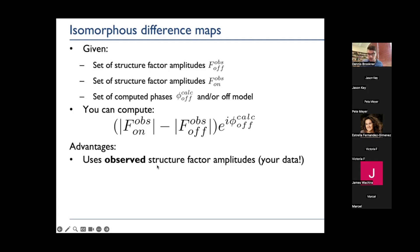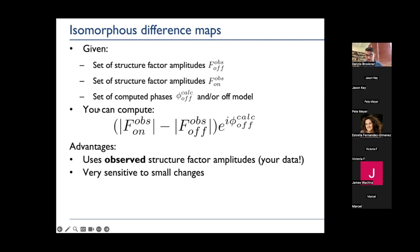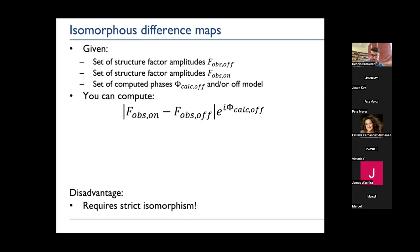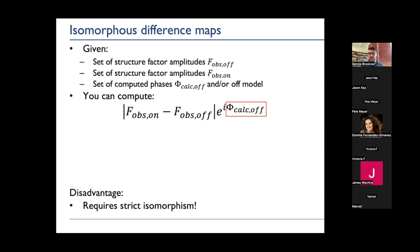Additionally, these kinds of maps can be very sensitive to small changes because reciprocal space subtractions are highly sensitive. The disadvantage of an isomorphous difference map, as you may guess from the name, is that these maps require strict isomorphism. I'm going to spend a couple of slides talking about the severity of this requirement.